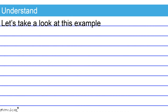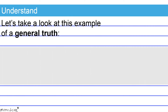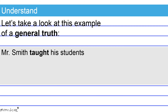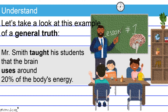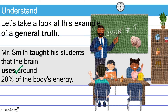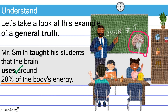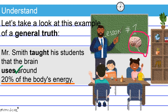Let's take a look at this example of a general truth: Mr. Smith taught his students that the brain uses around 20% of the body's energy. The sentence shifts to the present tense to state a general truth, and this shift is appropriate. We shift from a lesson Mr. Smith gave in the past to a biology fact that is also a general truth — hence, our shift to the present tense is warranted.